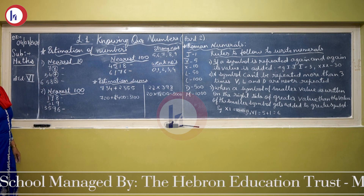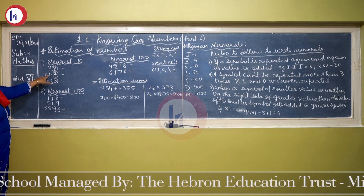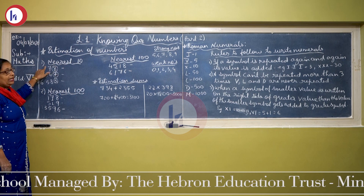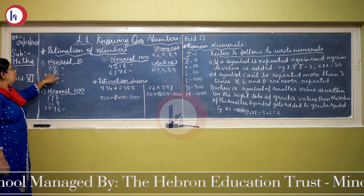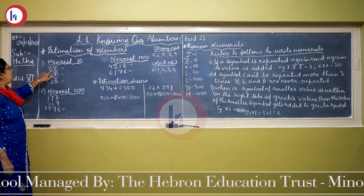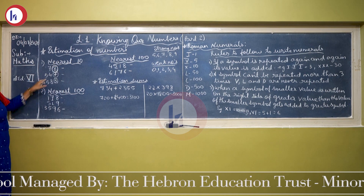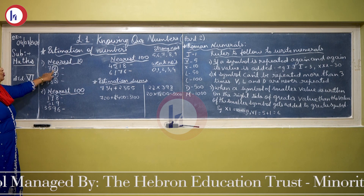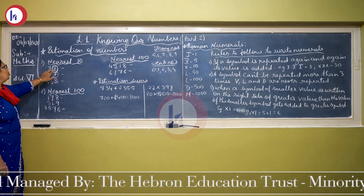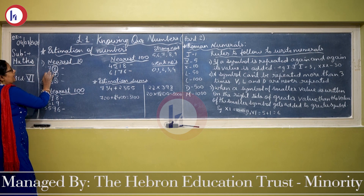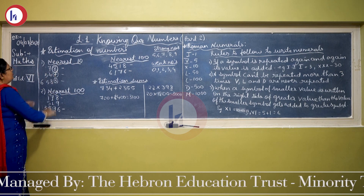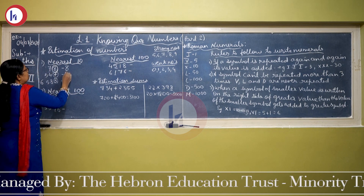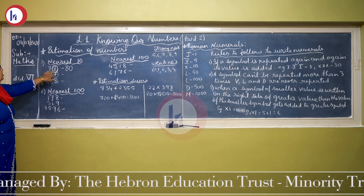Now with the help of this, we will try to understand rounding off to the nearest 10. Here the first example is 78. For finding out the nearest 10, we always have to look at the units place. Here it is 8 — 8 is a strong number. So 1 is added to the number in the tens place, 7 becomes 8, and the 8 is replaced by 0. So the nearest number for 78 is 80.